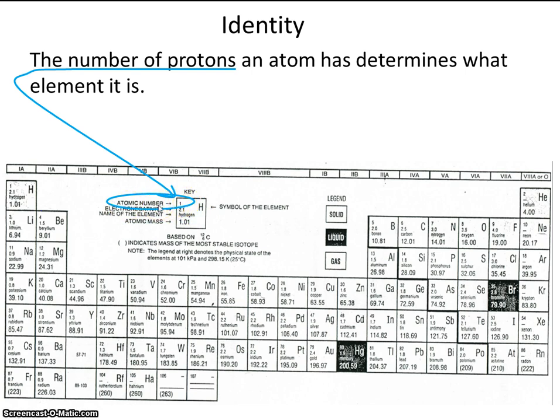Once again, what makes each element different is the number of protons that it has. For example, iron has 26 protons. Iron is right here on the periodic table.